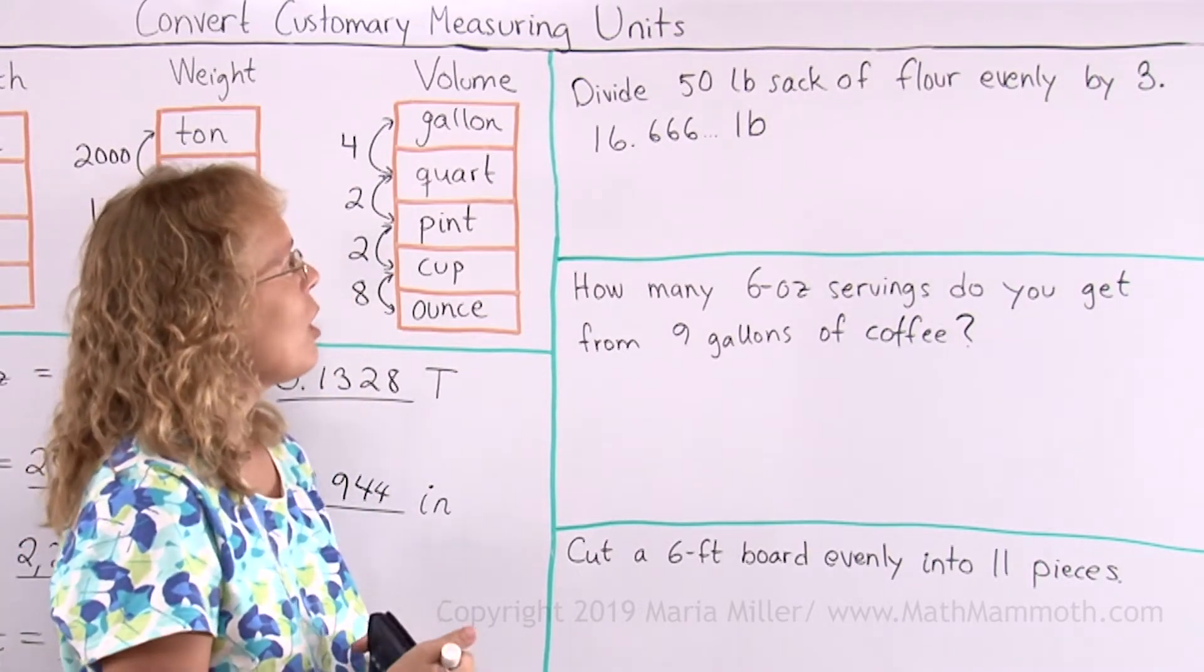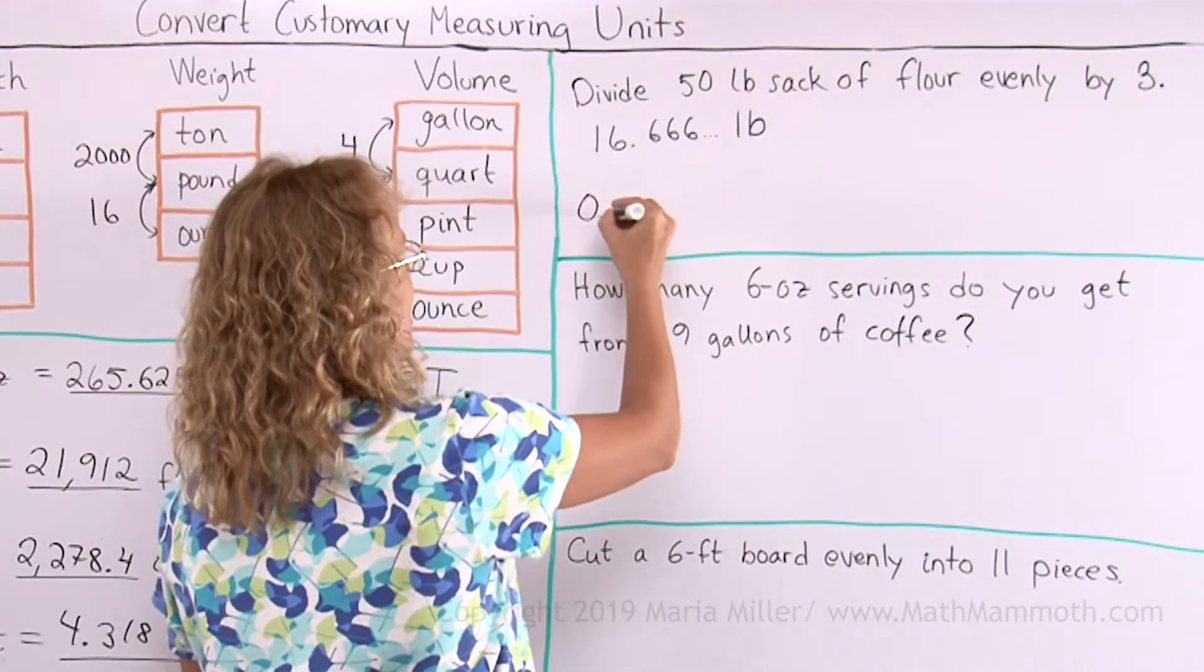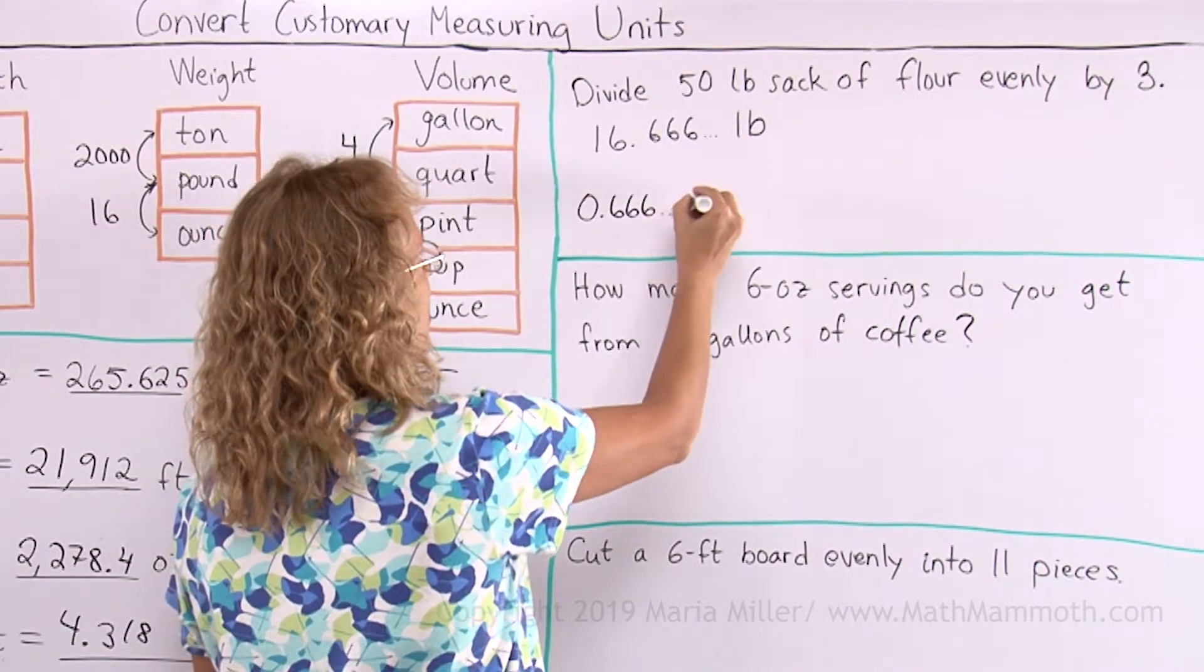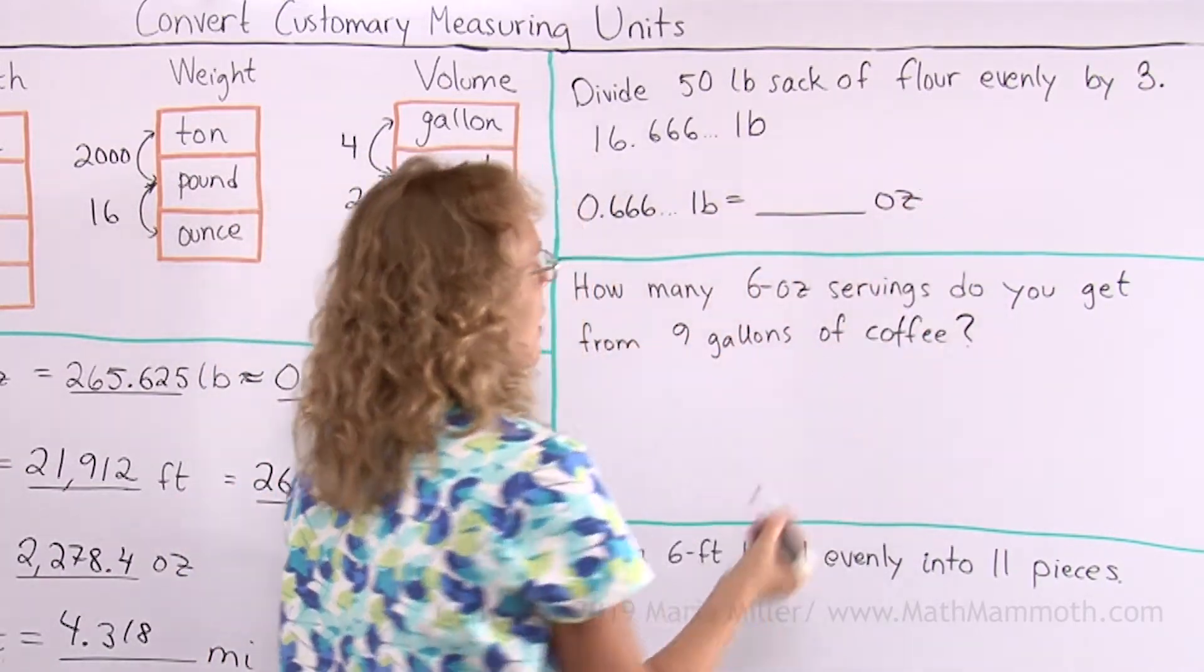Okay, so how do I do that? How do I convert this decimal part, this here, that many pounds into so many ounces? That's my question, right?